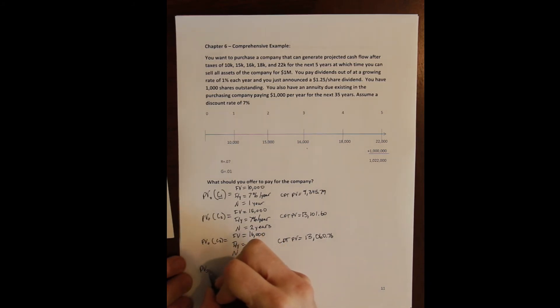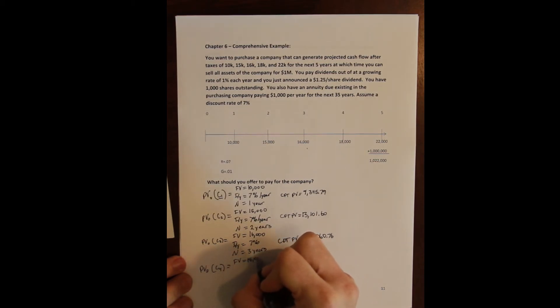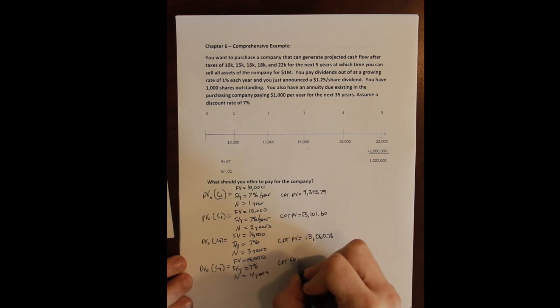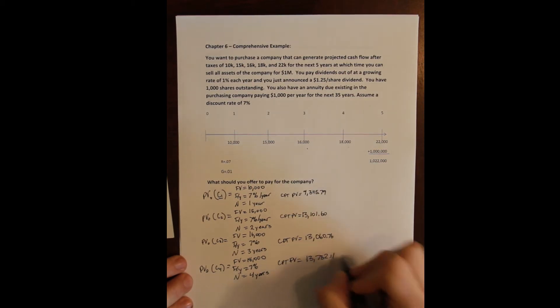So we do the present value of the fourth cash flow, whose future value is $18,000. Discount rate still 7% per year, but the N is four years in the future now. We compute the present value of the fourth cash flow and get $13,732.11.